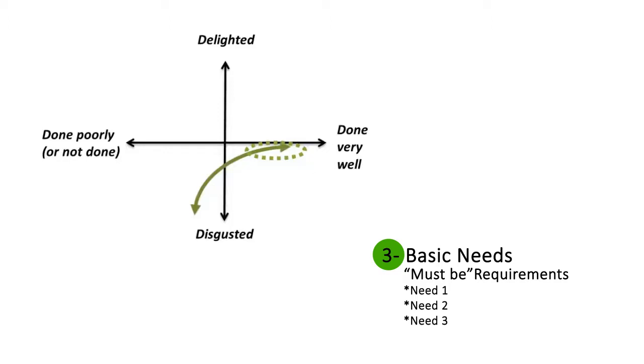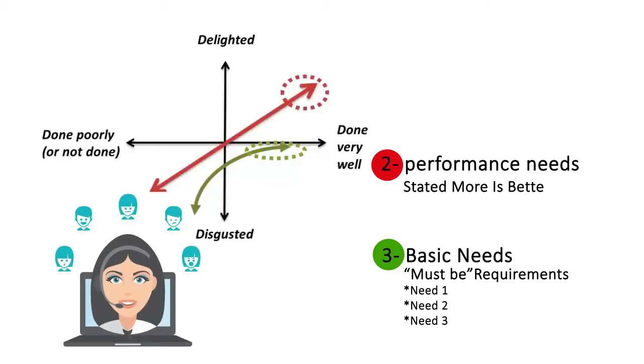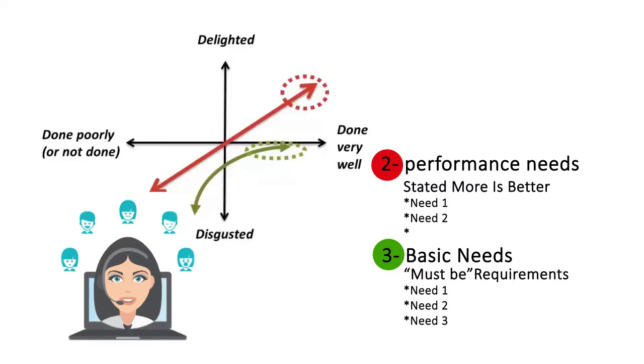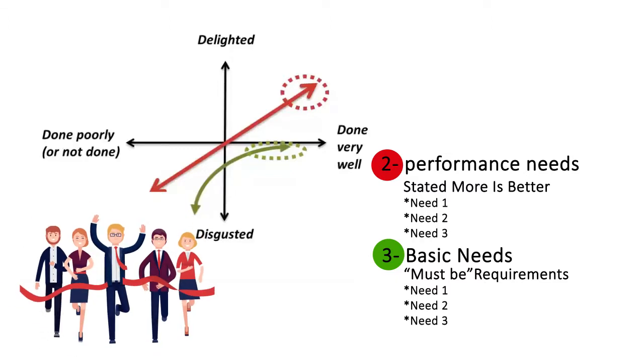The second category is performance needs. They are needs that customers can tell you about, and typically more is better. This is what you will compete with your competitors on.